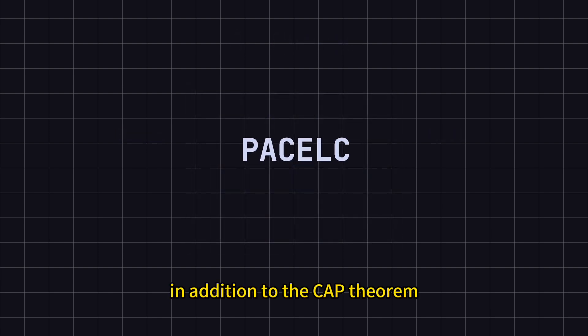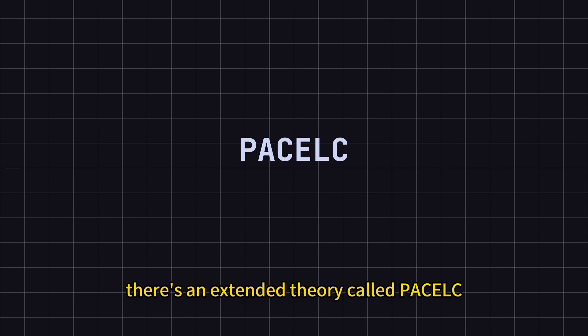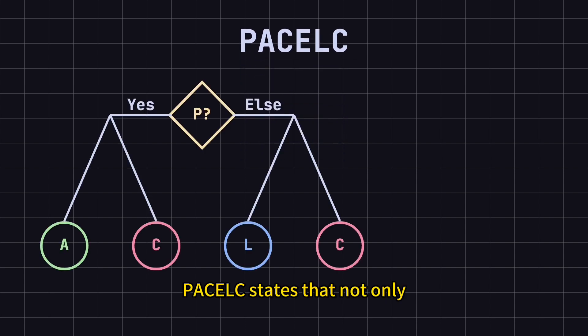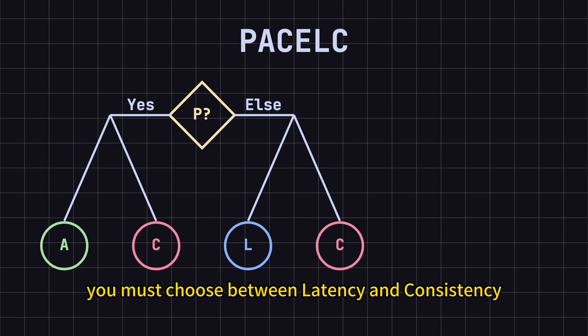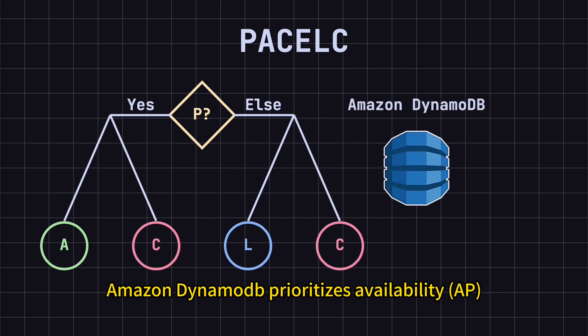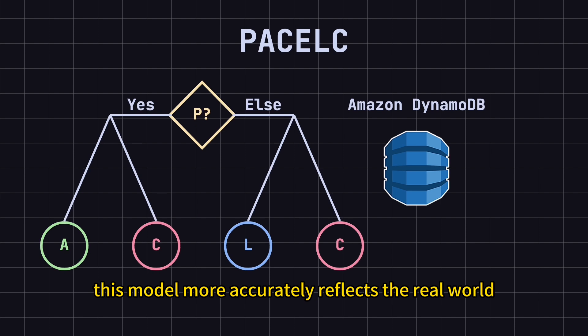In addition to the CAP theorem, there's an extended theory called PACELC, which offers a more comprehensive view of distributed system properties. PACELC states that not only during network partitions must you choose between consistency and availability, but even when the network is running smoothly, else, you must choose between latency and consistency. For instance, Amazon DynamoDB prioritizes availability, AP, during network partitions and low latency, EL, during normal operations. This model more accurately reflects the real-world challenges in distributed system design.